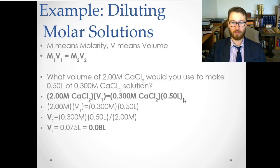We plug all those numbers in. Now we have to solve for V1. Well, how do we solve for V1? It's like, how do we solve for X? Well, you're going to have to divide both sides by 2 in order to get V1 by itself. So we do that. We take 0.3 times 0.5 divided by 2. That gives us V1. So V1 equals 0.075 liters or 0.08 liters if you're rounding to two decimal places.